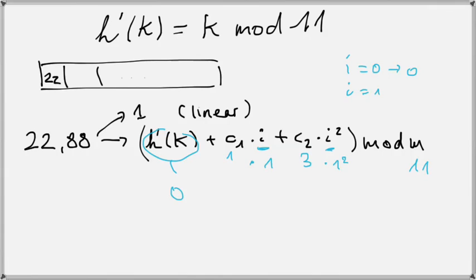I sum all of this up. That gives me 0 plus 1 plus 3, which is 4. 4 mod 11 is still 4, so that means I would place 88 on position 4.